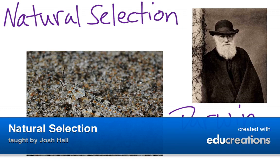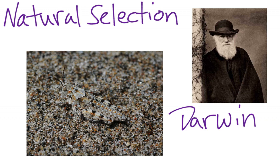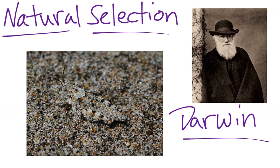In this episode, we're going to look at the real major contribution that Charles Darwin made to the theory of evolution. It had been suspected for a long, long time that organisms changed, that they weren't fixed. But Darwin is the one who really first proposed the mechanism by which organisms are able to change over time, and that mechanism he called natural selection.